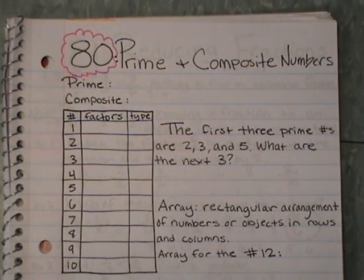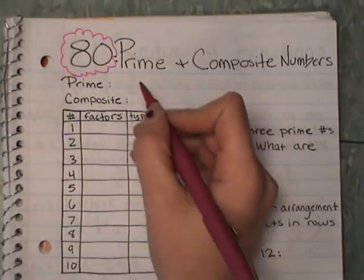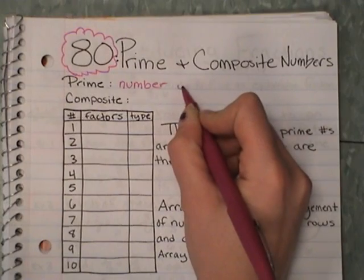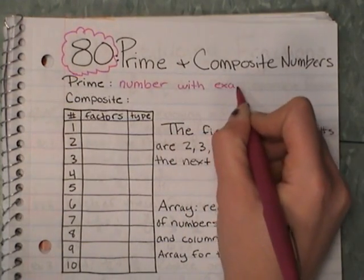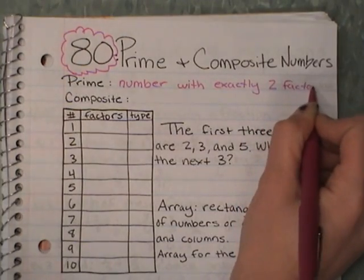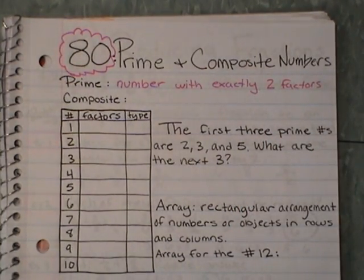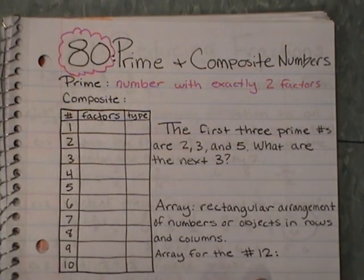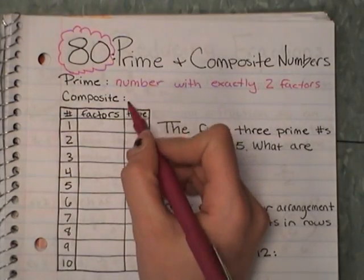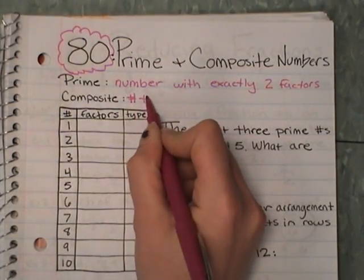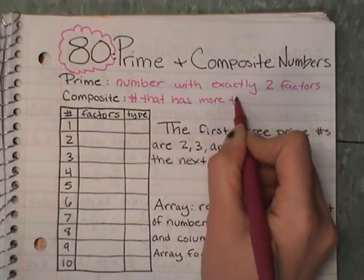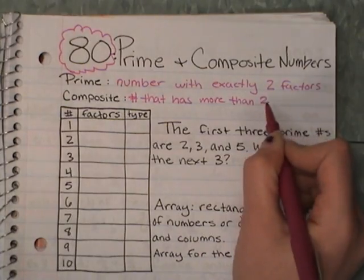A prime number is a number with exactly two factors. A composite number is a number that has more than two factors.